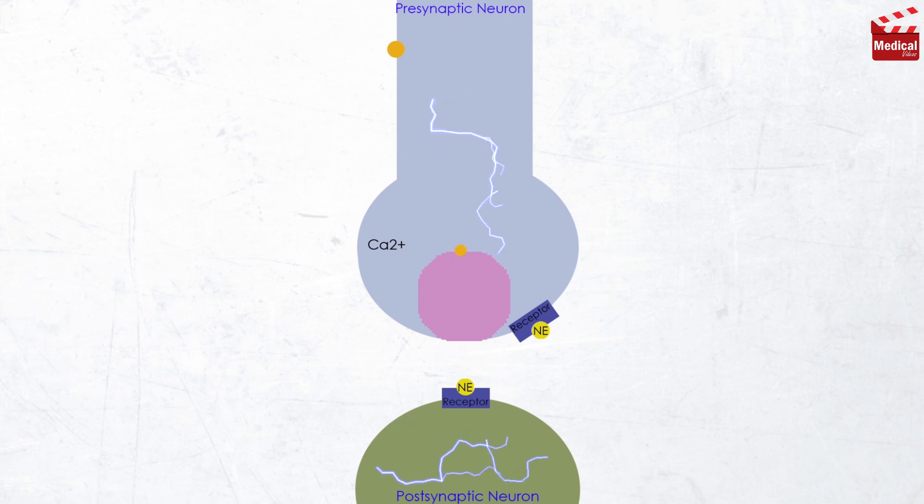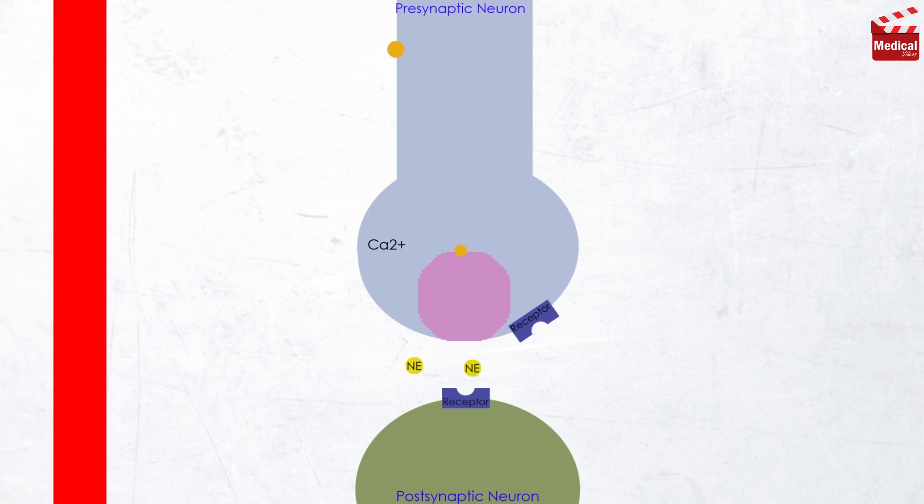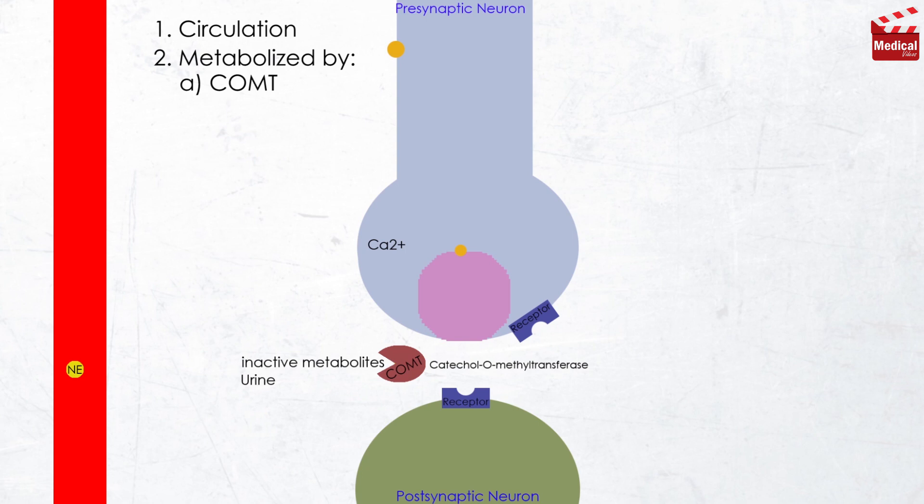Then comes the last step, which is the removal of noradrenaline, and actually there are multiple options for this process to be done. Noradrenaline may diffuse out of the synaptic cleft and enter the systemic circulation, or it may be metabolized to inactive metabolites that will be excreted in urine by catechol-O-methyltransferase, known as COMT, in the synaptic space.